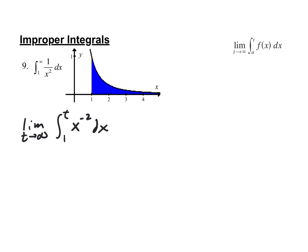Our next move is we're going to integrate this, thinking about it as a definite integral with T as some real number. So go ahead and integrate x to the negative 2 and set it up.